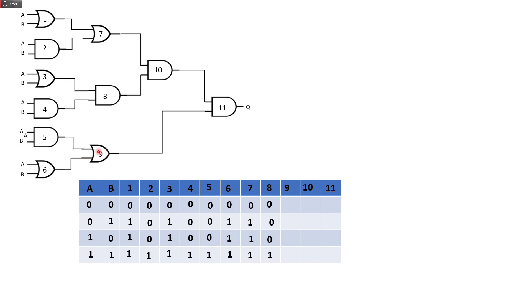Gate 9 is an OR gate based on gates 5 and 6. So: 0 or 0 is 0, 0 or 1 is 1, 0 or 1 is 1, and 1 or 1 is still 1.